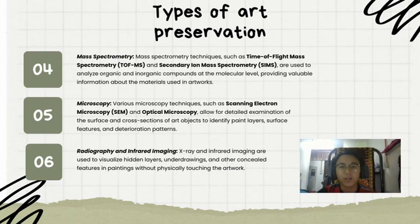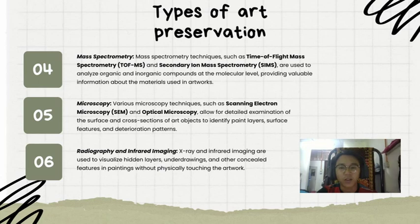Number four is mass spectrometry — techniques such as Time-of-Flight Mass Spectrometry and Secondary Ion Mass Spectrometry are used to analyze organic and inorganic compounds at the molecular level, providing valuable information about the materials used in artwork. Number five is microscopy — various techniques such as Scanning Electron Microscopy and optical microscopy allow for detailed examination of the surface and cross-sections of art objects to identify paint layers, surface features, and deterioration patterns.